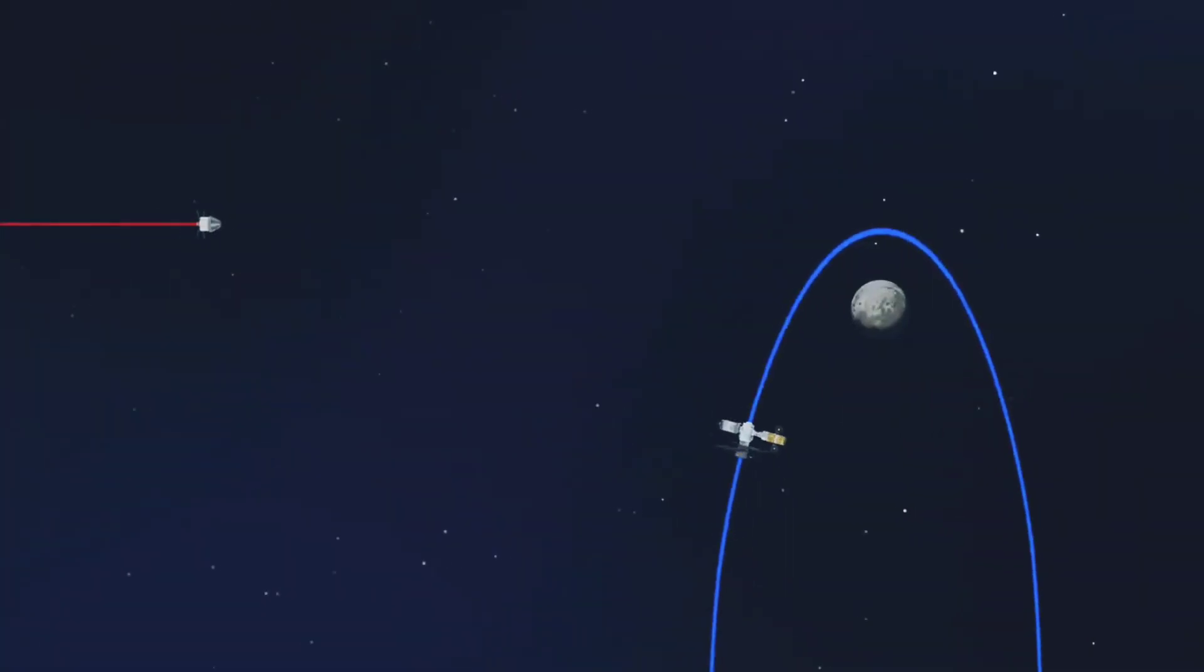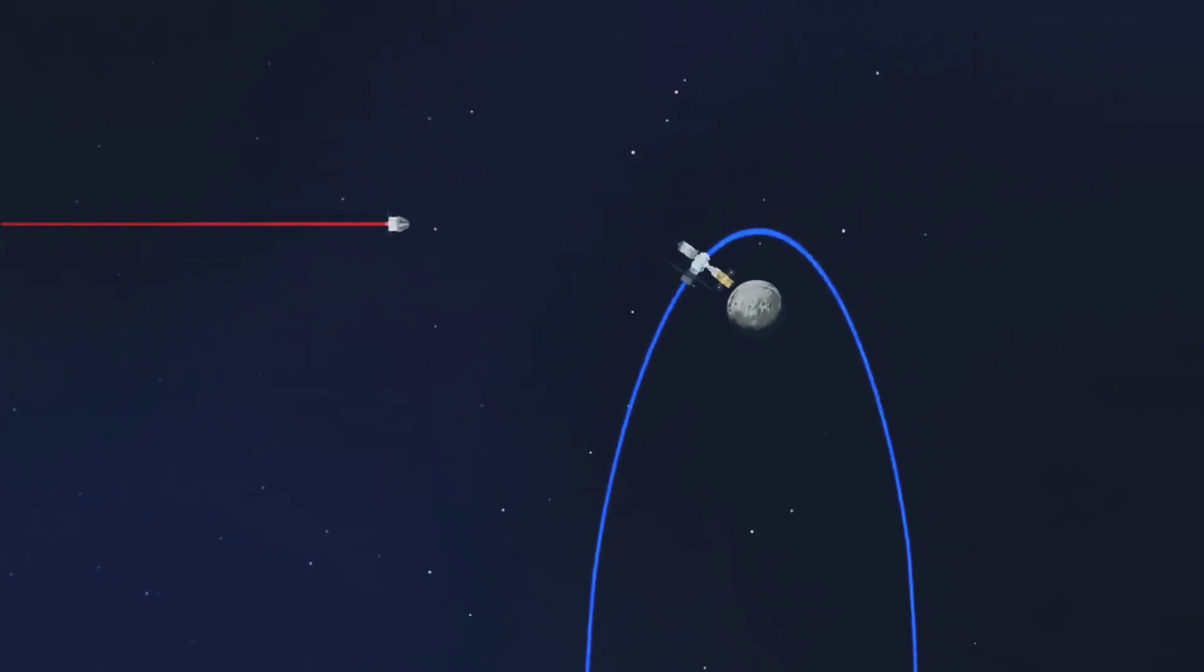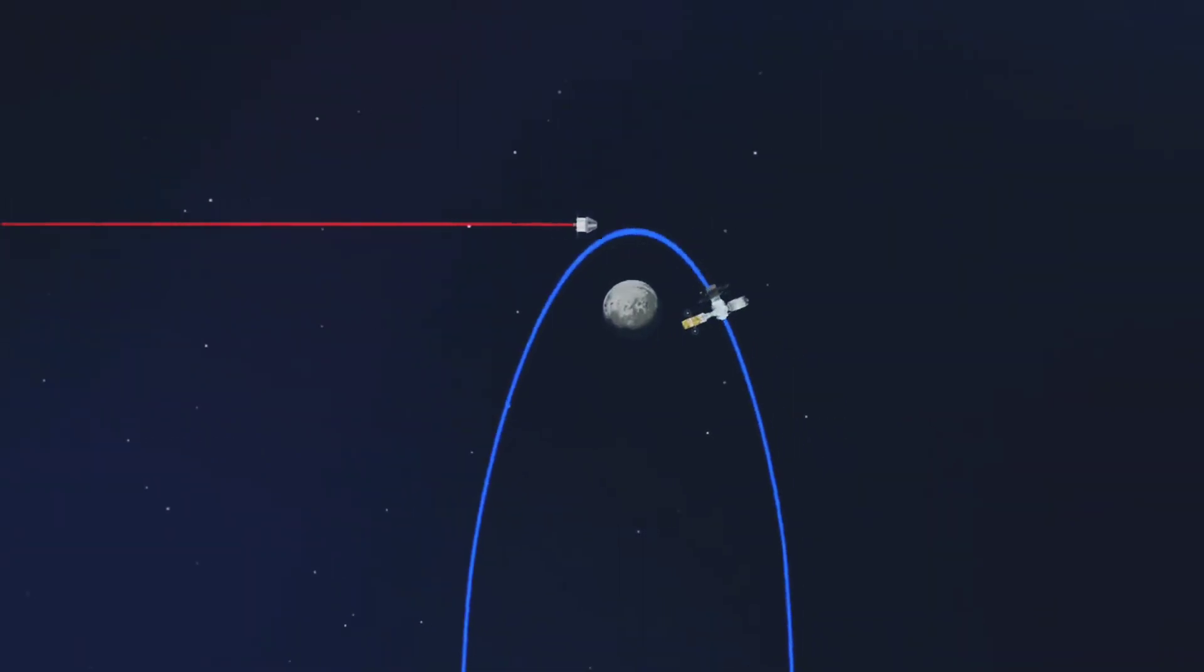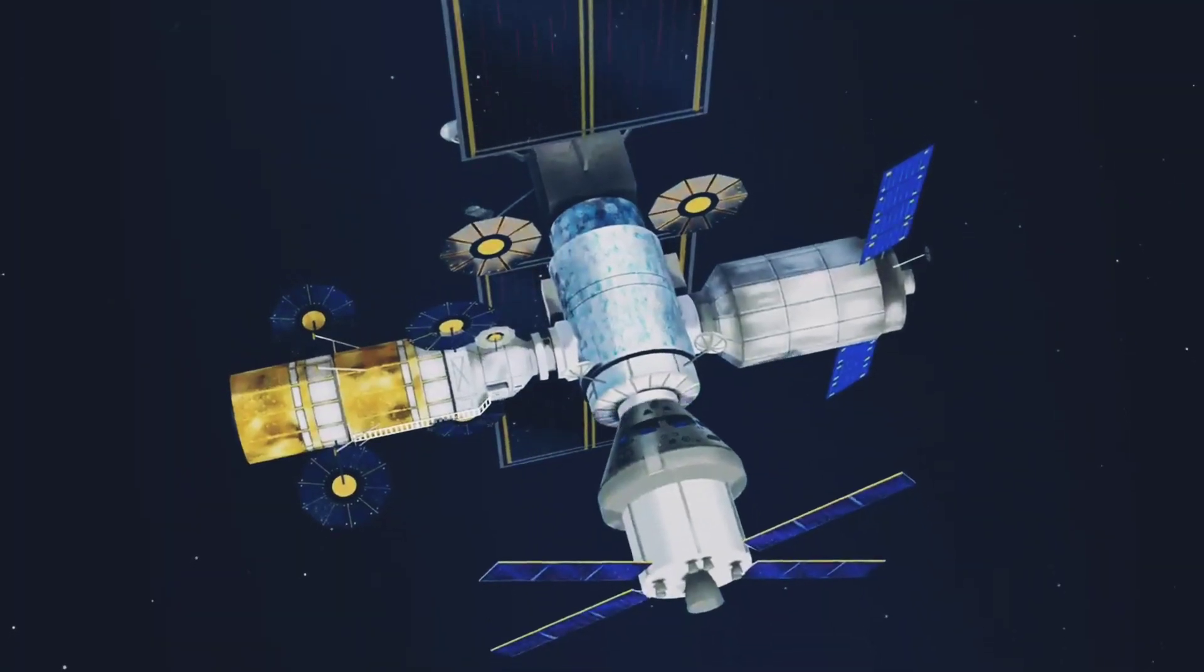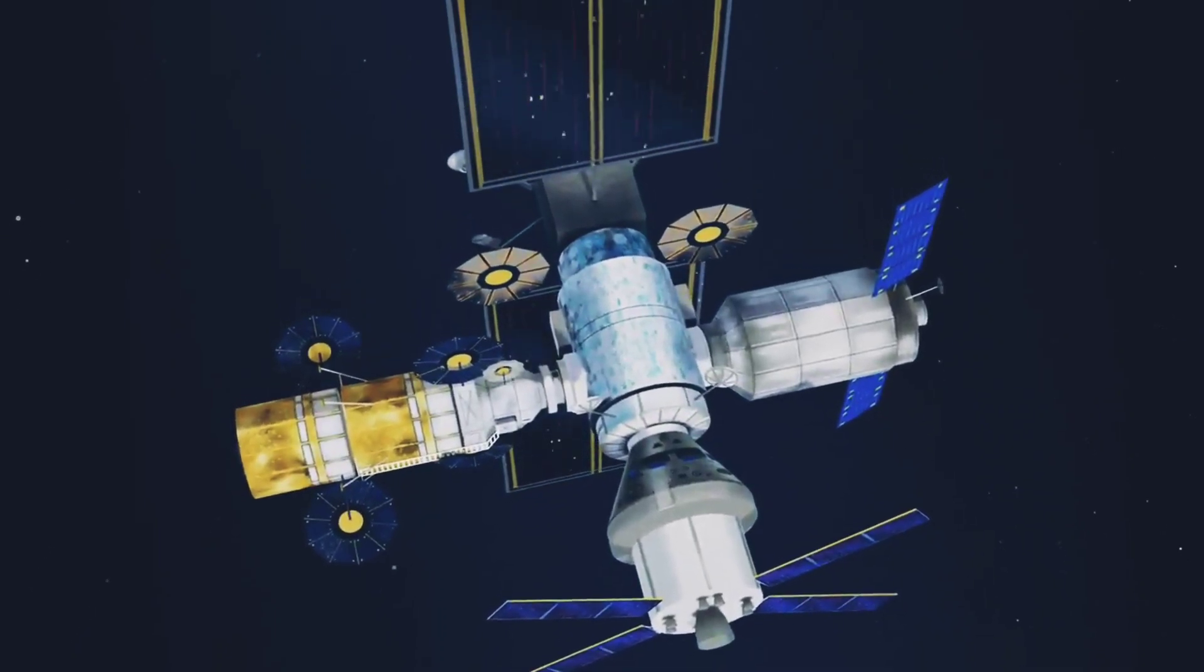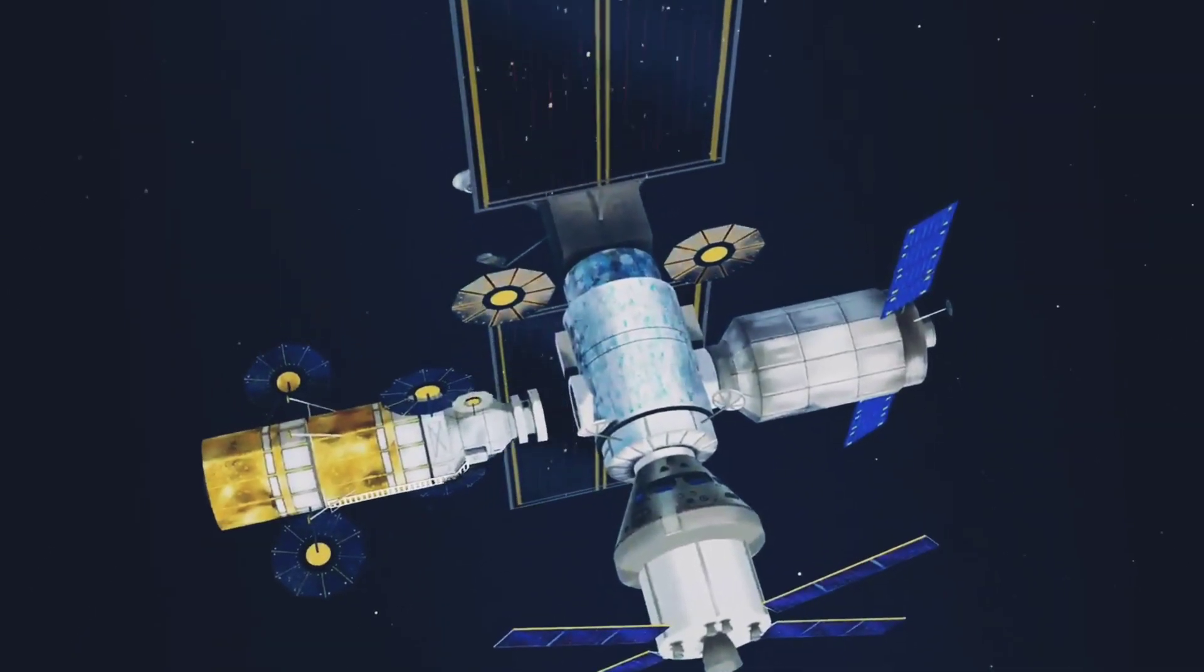Returning to our crew as they approach Gateway, the Orion must match the elliptical orbit of the station in order to successfully dock. Once on board, pre-selected crew members transfer to the lunar lander, while those assigned to Gateway remain on station.